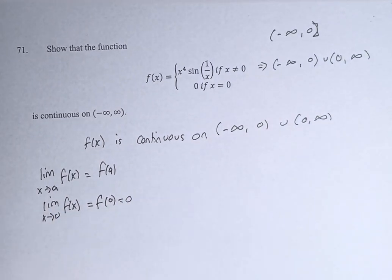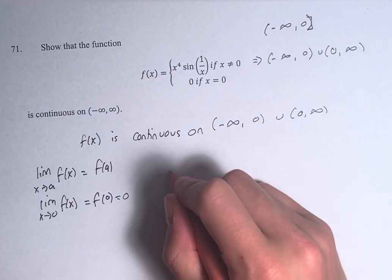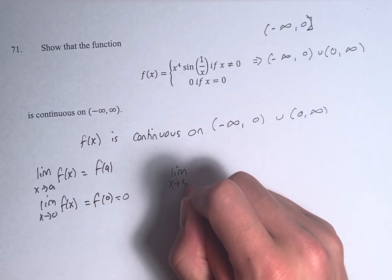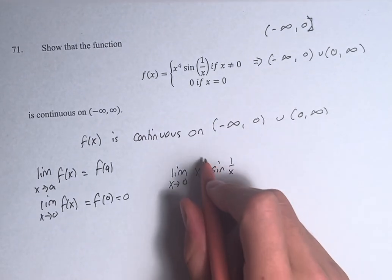So when we're not at 0, when we're approaching 0, we need to use x to the fourth times sine of 1 over x. So does the limit as x approaches 0 of x to the fourth times the sine of 1 over x equal 0? What does this equal to?